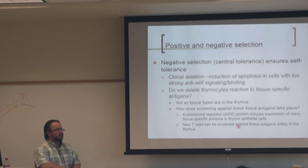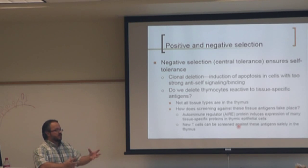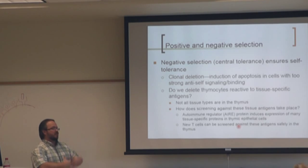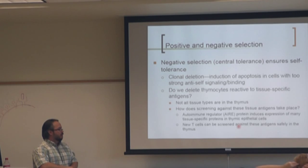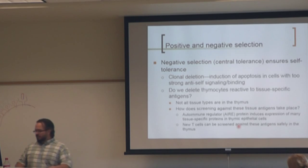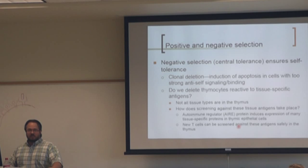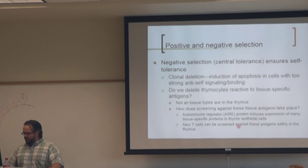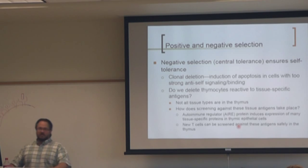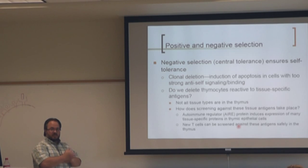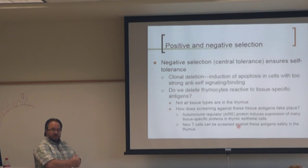The mTECs are the medullary thymic epithelial cells, and AIRE is the transcription factor specifically made in these cells that allows them to regulate everything — it's a permissive transcription factor that just turns everything on. There are thymic epithelial cells in both the cortex and the medulla. The medullary thymic epithelial cells make AIRE, whereas those in the cortex do not.